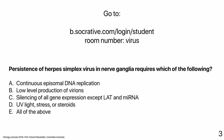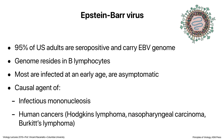A poll asked what persistence of herpes simplex virus in nerve ganglia requires. The correct answer is silencing of all gene expression except LAT and microRNA. There is no continuous episomal DNA replication — the genome goes in, neurons don't replicate, so the genome doesn't have to replicate either. There is no low-level production of virions during latency. UV light, stress, and steroids are triggers for reactivation, not requirements for persistence itself.